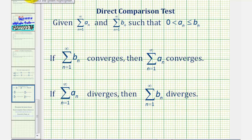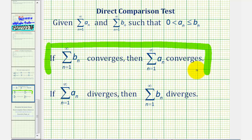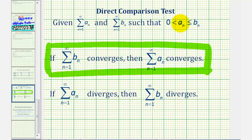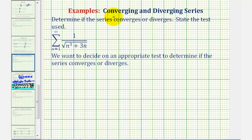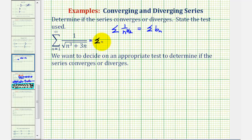Because we're trying to show convergence, we want to show that b sub n is a known converging series, and that the terms of the given series, a sub n, will always be less than or equal to b sub n — the terms from the known converging series. If these terms are less than the terms from the converging series, we can conclude that the sum of a sub n also converges. From the limit comparison test, we know we're comparing to the sum of one divided by n to the three halves, which converges, so we let this equal the sum of b sub n, and the given series is the sum of a sub n.